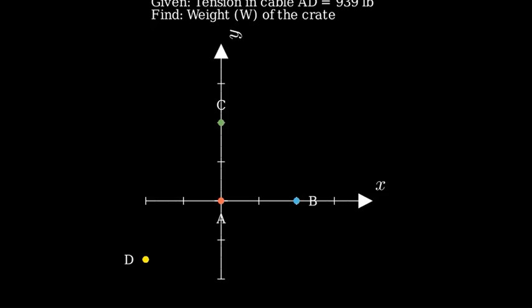Now, let's draw the cables connecting these points. Cable AD is the one we know has a tension of 939 pounds. And here's our crate at point A, being supported by these cables.